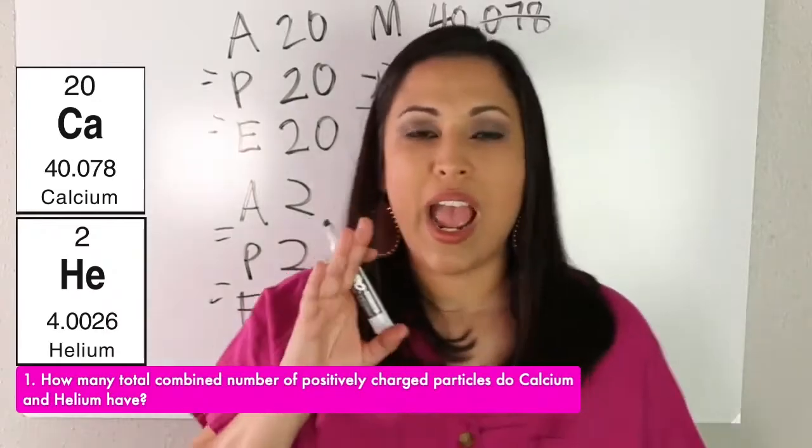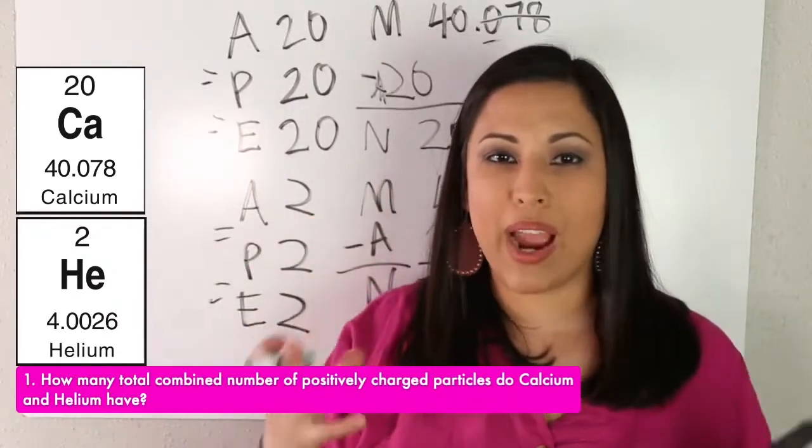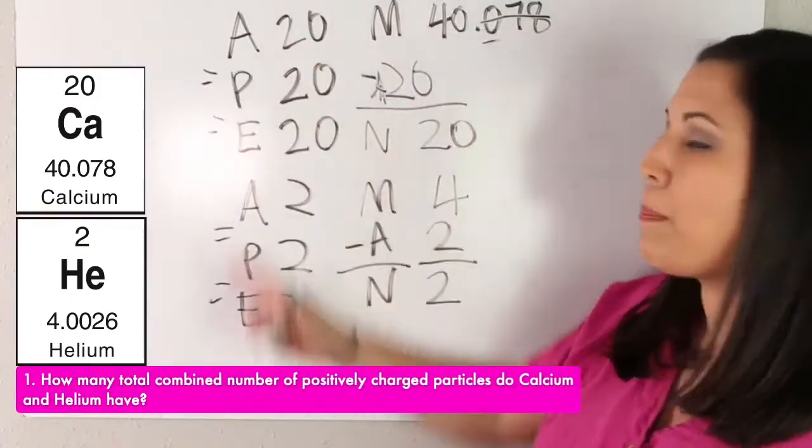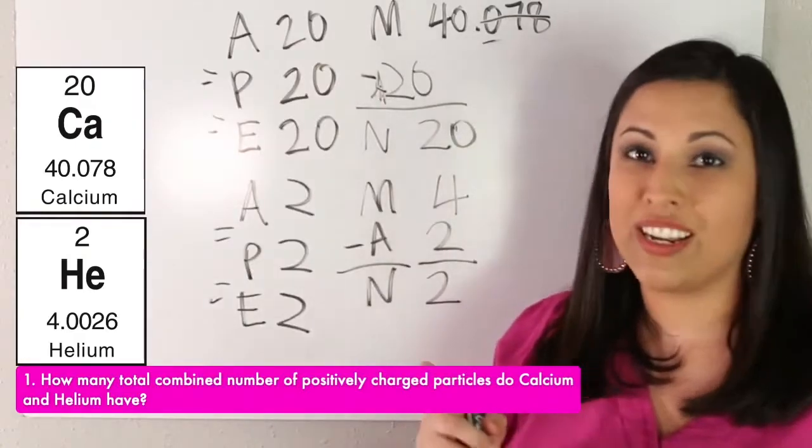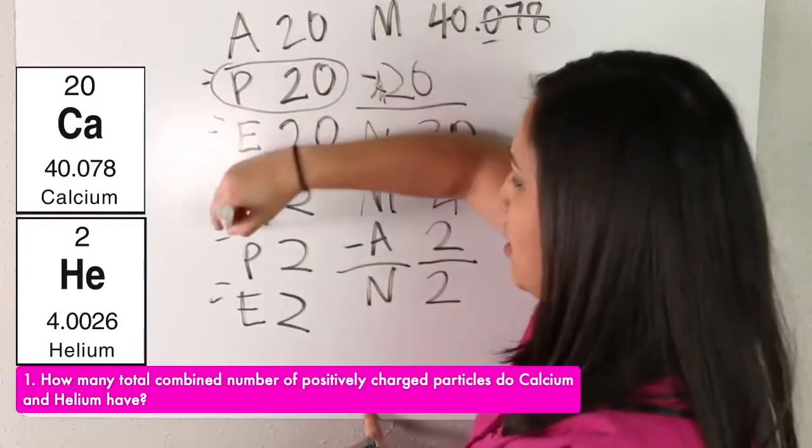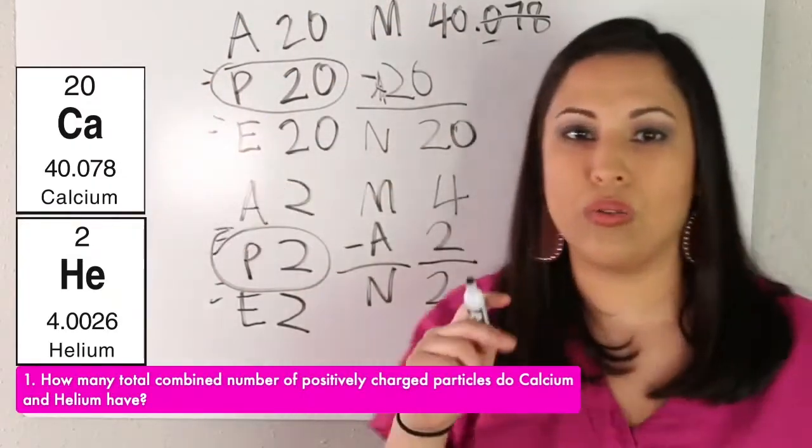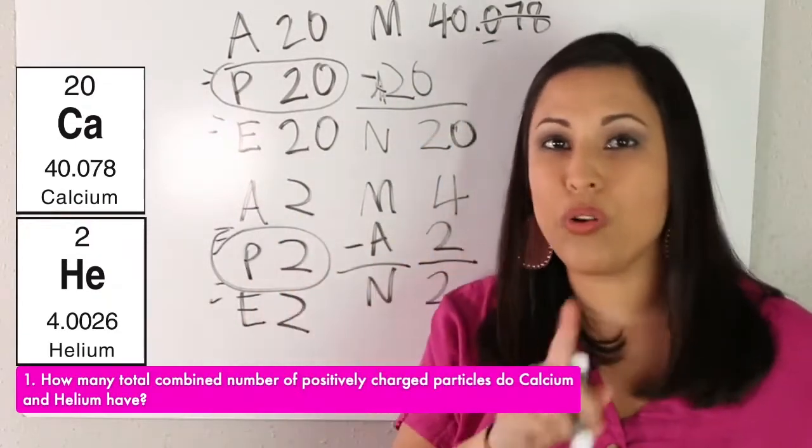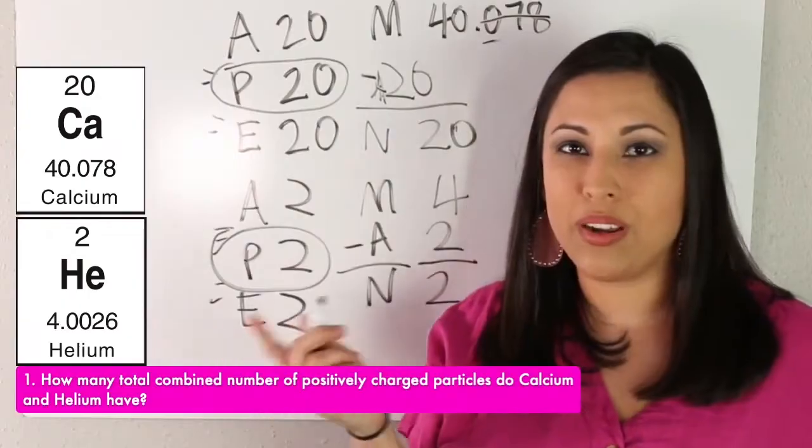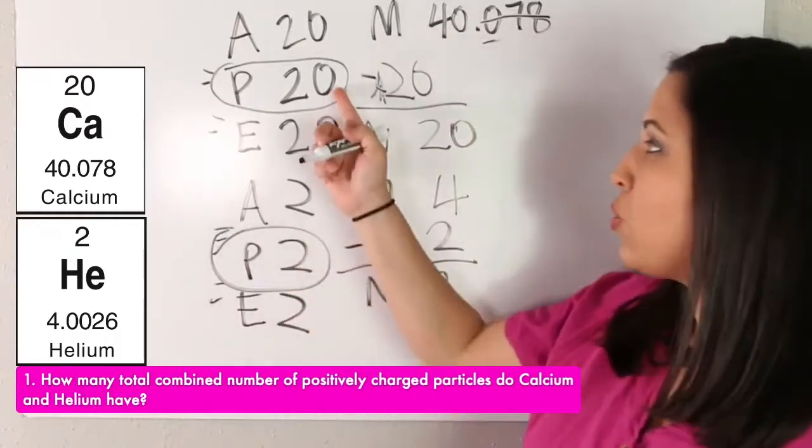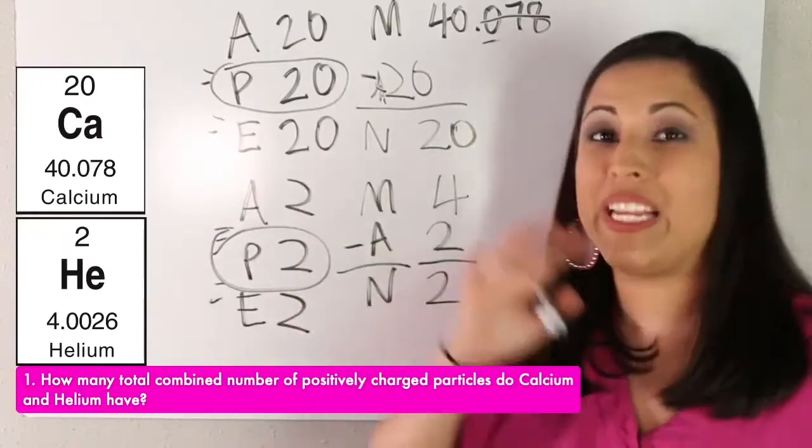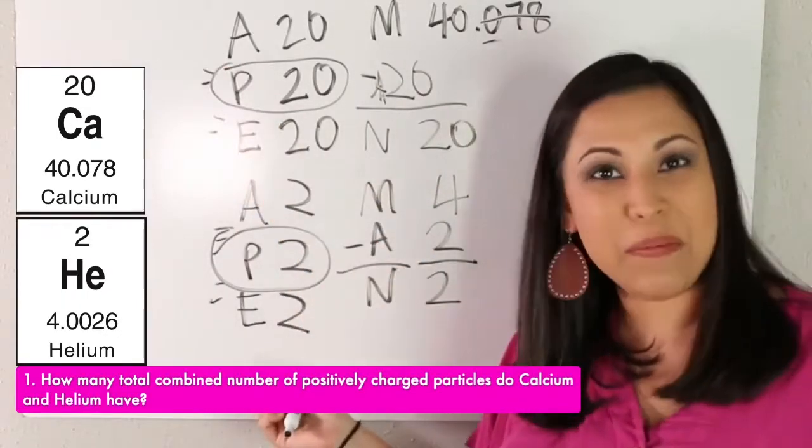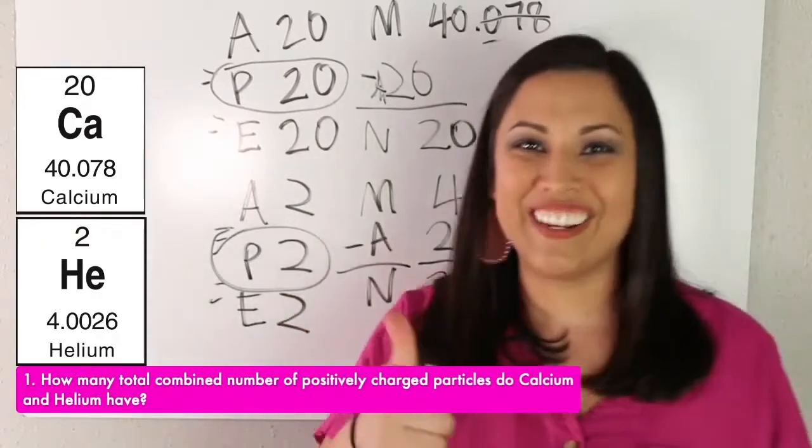Okay, let's go back to the question. How many total combined number of positively charged particles? Which one of these are positively charged? Our protons. So I'm going to circle those. Total for calcium and helium. So total, remember, what are we going to have to do? We're going to add them. So 20 plus two, how many total positively charged particles does calcium and helium have? 22. Good job.